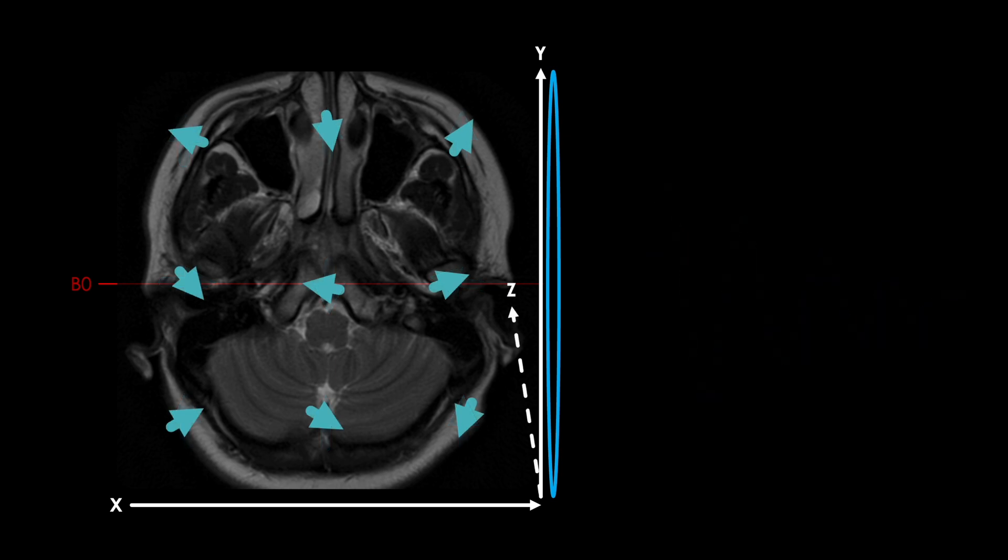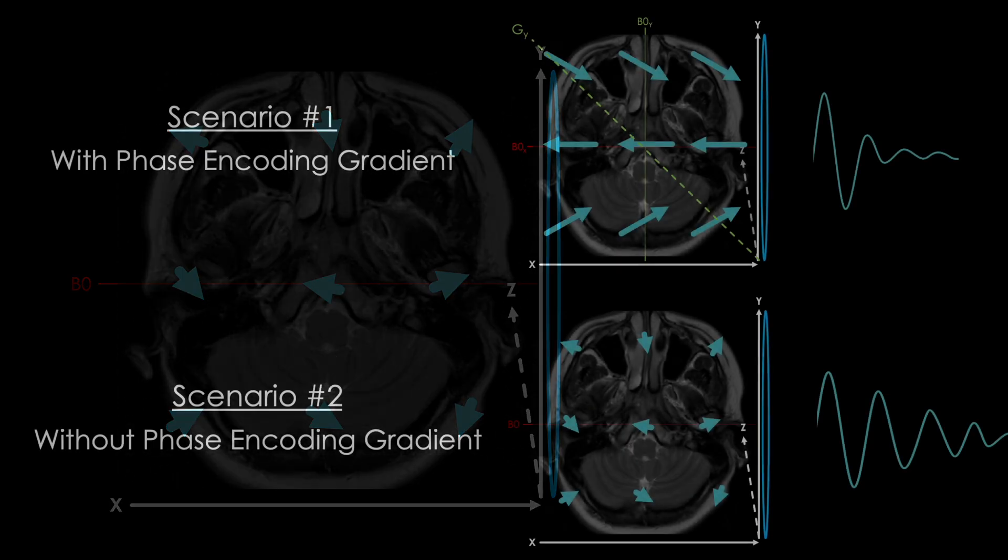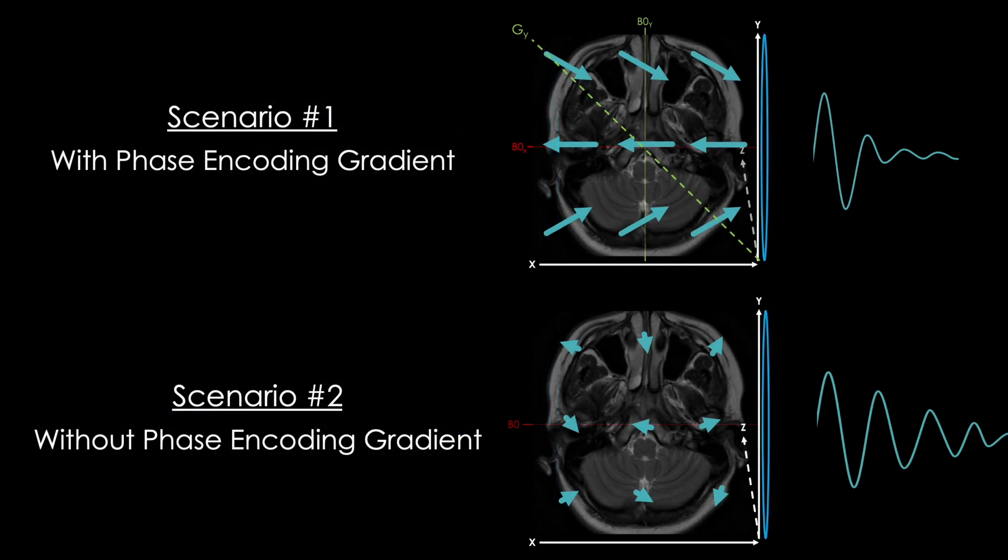Let's take a look at these side by side. The signal in both scenarios starts off similarly, but the phase encoding gradient signal abruptly dies out here, which correlates with the time at which we turned on the gradient, while the normal free induction decay signal does its usual thing, slowly getting weaker and weaker over a longer time period without any abrupt changes. So what's going on here?